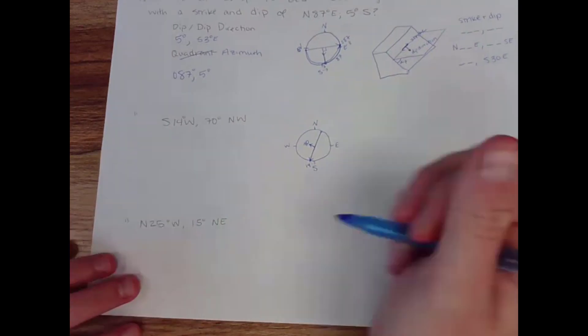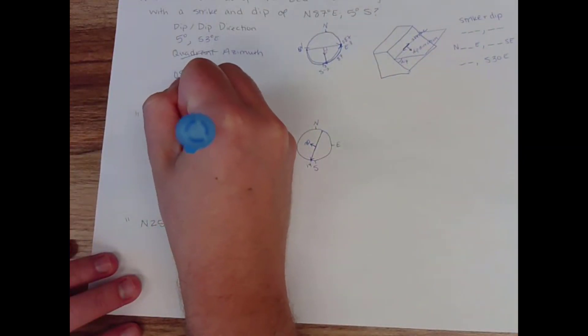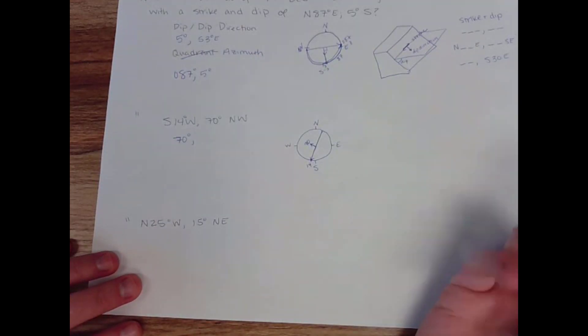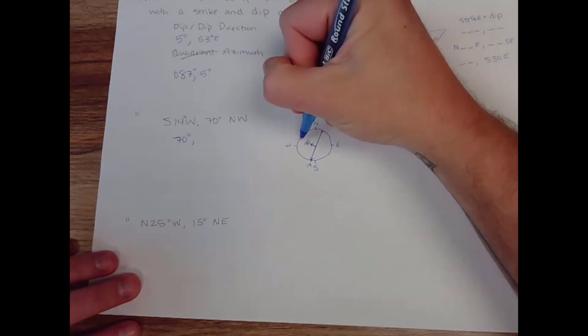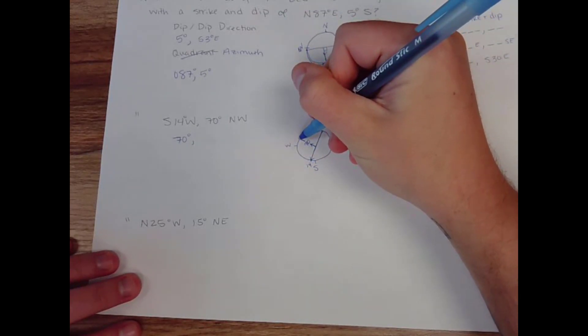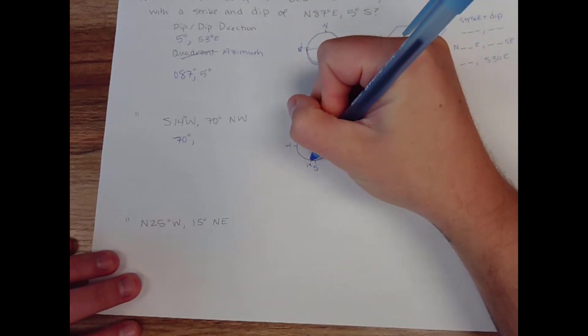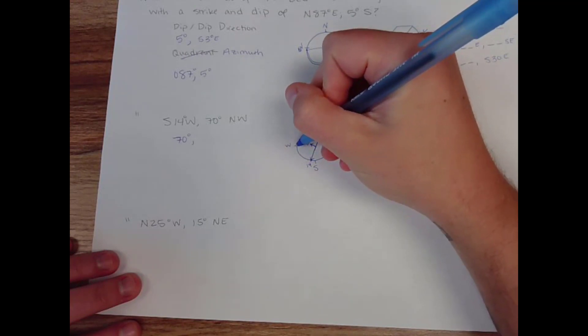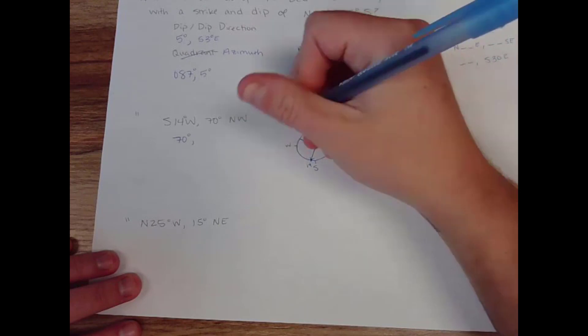So dip, dip direction would be my dip amount, which is 70. And my dip direction, which is going to be this plus 90. Okay. So if this is 14, I'm going to add here to get part of the way and another 14 degrees.